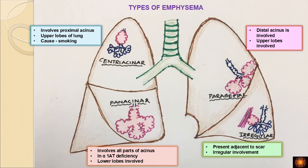To summarize all types: centriacinar involves the proximal part (respiratory bronchioles), is present in the upper lobes, and is most commonly caused by smoking. Panacinar involves all parts of the acinus, is present in the lower lobes, and is caused by alpha-1 antitrypsin deficiency. Paraseptal is in the upper lobes along the pleura or perilobular septa, involving the distal parts. Irregular is along scar tissue with irregular involvement of any part of the acinus.